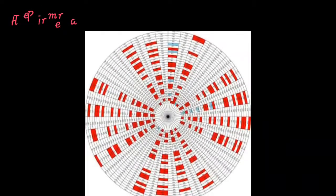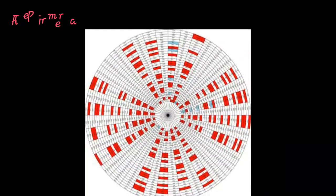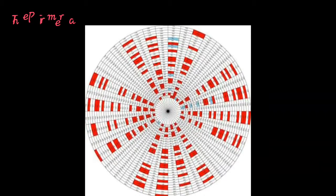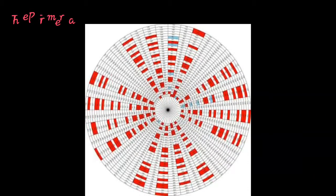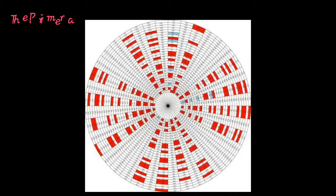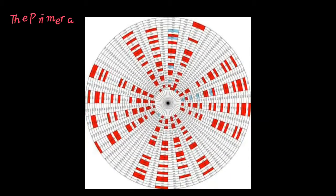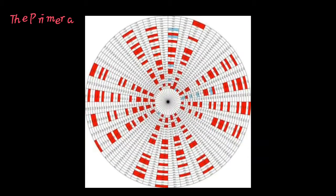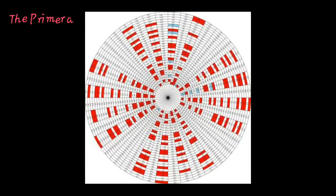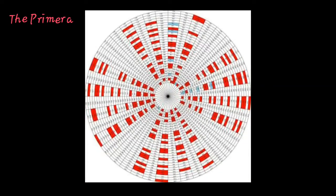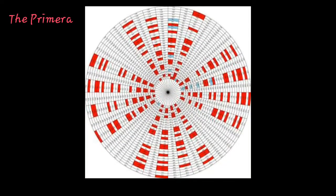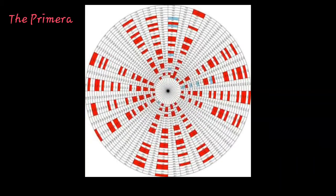Now divide 57 by 3. Is it a whole number? Yes, you will see that 57 divided by 3 is 19, which is indeed a whole number. Is 57 prime? No — 19 and 3 are its factors, which means the number is not a prime number, though its factor 19 is a prime number.